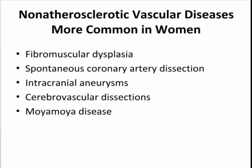It's interesting because many of these conditions affect primarily the cerebrovascular arteries. In contrast, men are more likely than women to have disease of the large arteries like the aorta. Abdominal aortic aneurysms, thoracic aortic aneurysms, and aortic dissections have a male predominance, while these non-atherosclerotic vascular diseases affecting primarily the cerebrovascular circulation tend to affect women. These sex differences we don't really understand.